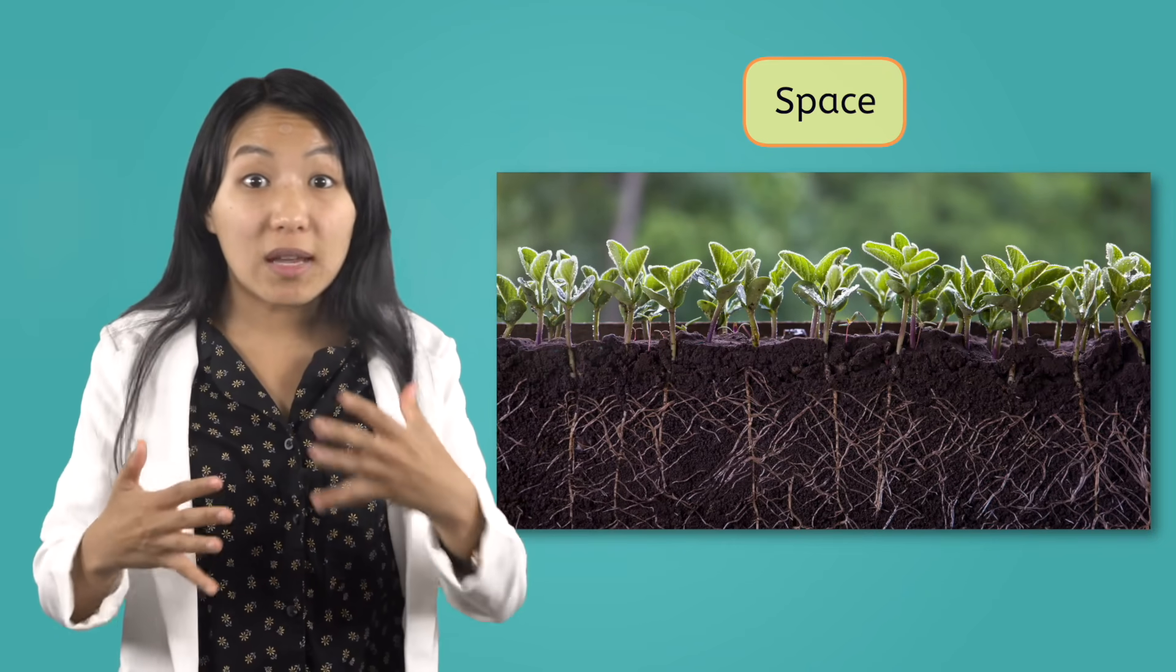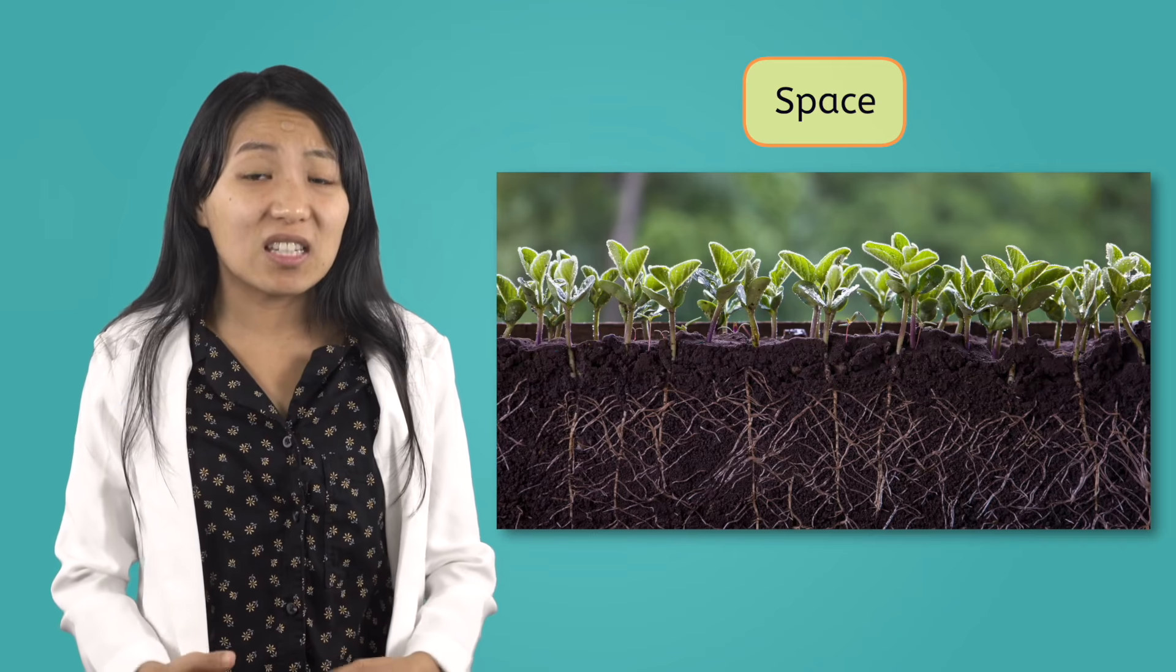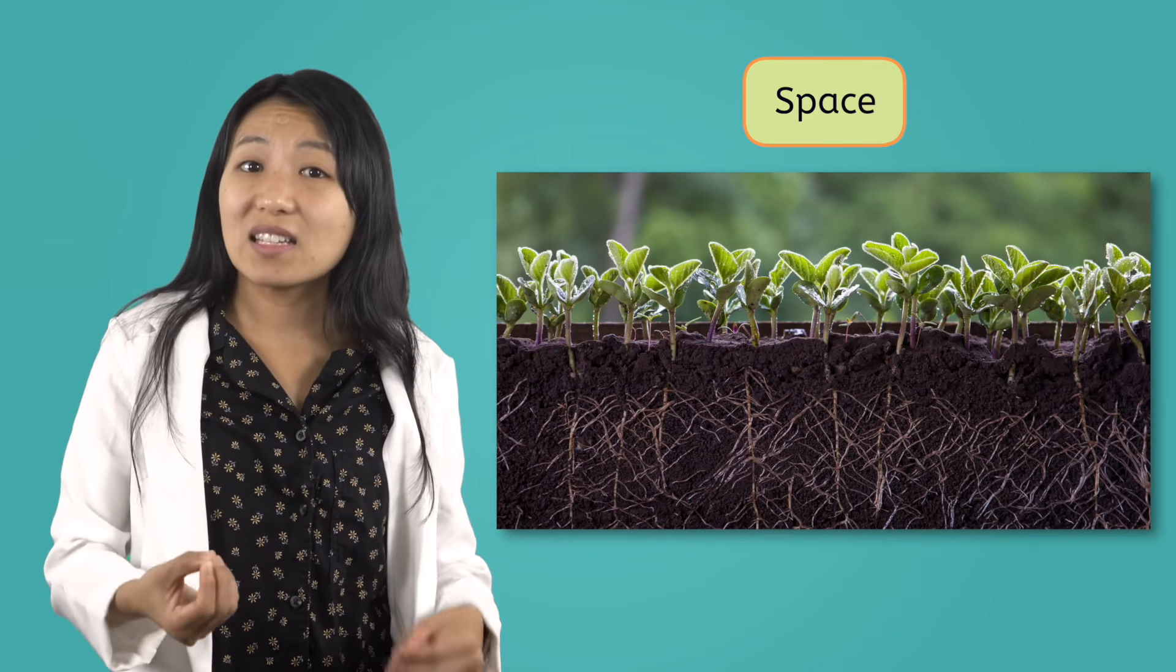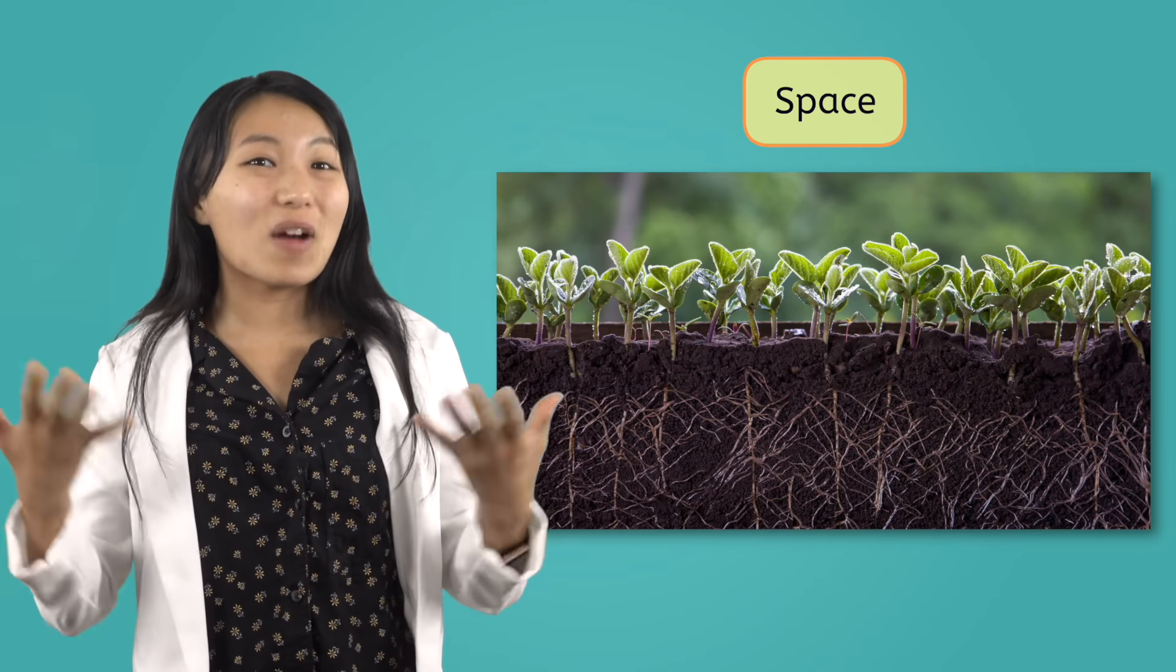Sometimes when too many plants are too close together, they have to compete to get enough nutrients, light and air. This makes it difficult for a plant to thrive.